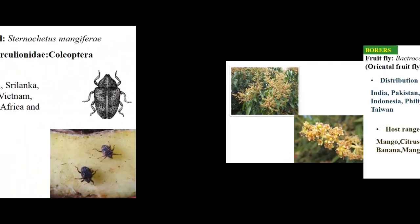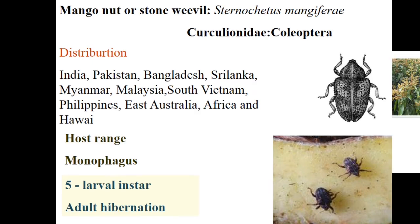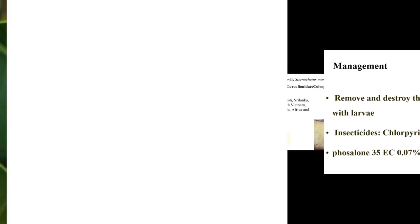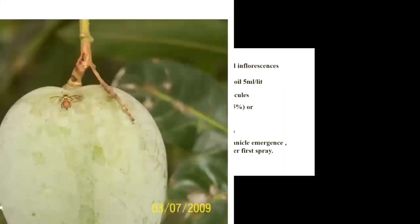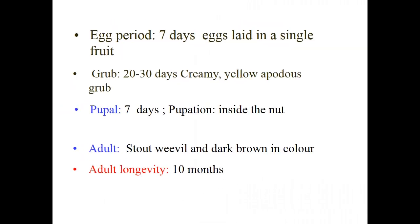Mango nut or stone weevil — Sternochetus mangifera, family Curculionidae, order Coleoptera. It is a monophagous pest of mango with five larval instars. Importantly, it has adult hibernation (resting stage). It is a common pest in southern India; varieties with high TSS and sugar such as Alphonso are more prone to attack. The female lays eggs under the rind of ripening fruit; newly emerged grubs go through the pulp and feed on the seed coat.